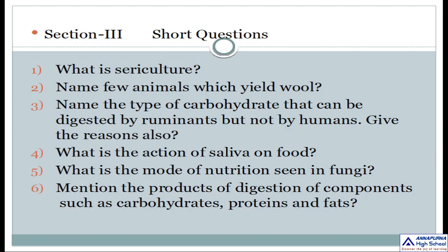Section 3: Short questions. What is sericulture? Name a few animals which yield wool. Name the type of carbohydrate that can be digested by ruminants but not by humans — give the reasons also. What is the action of saliva on food? What is the mode of nutrition seen in fungi? Mention the products of digestion of components such as carbohydrates, proteins, and fats.